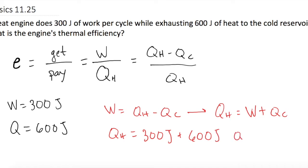So efficiency is equal to work, which is 300 joules, over QH, which we just solved for as 900 joules. So efficiency is 3 over 9, or 1 third, so E is equal to 0.33, or 33% efficiency.